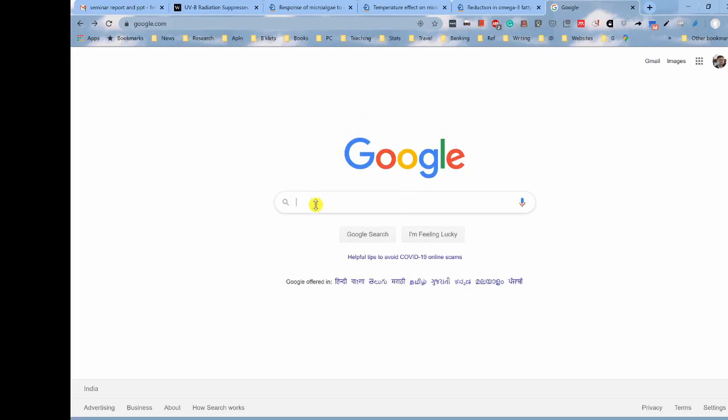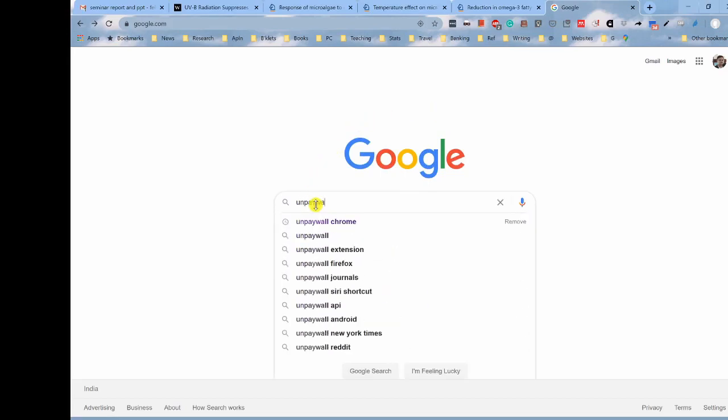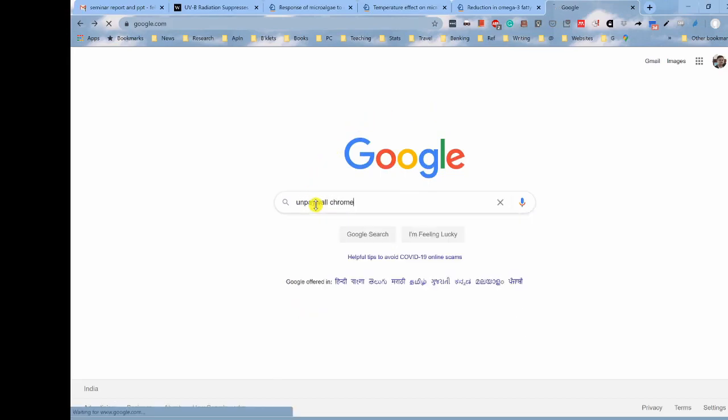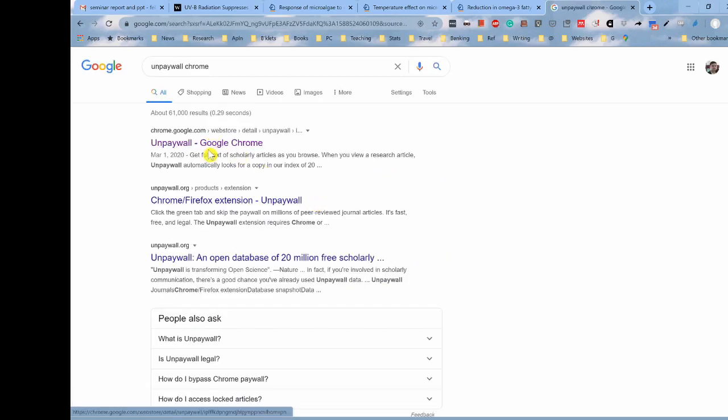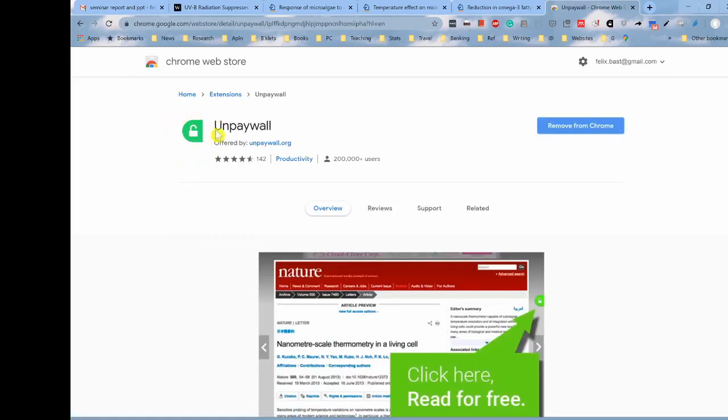And click on the first link. So, this is an extension of the Chrome web store Unpaywall. So, as I have this extension already installed in my Chrome, it's asking me to remove it from the Chrome. If you don't have it, then this will ask you to install it first. So, please install this software. This is nothing but an extension. So, if you install it as this image says, you are going to see an icon on the right side of your screen whenever you are in a publisher's website.